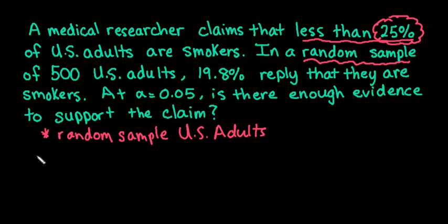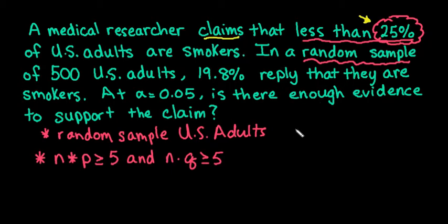The other one that's the most important is, in order for the central limit theorem to kick in, N times P has to be greater than or equal to 5, and N times Q also has to be greater than or equal to 5. So basically what this is saying is the number of successes has to be greater than or equal to 5, and the number of failures. So the P and the Q always come from our claim. So since 25% is our proportion that's in our claim, we're going to say that P is 0.25.